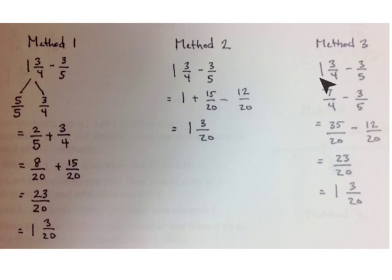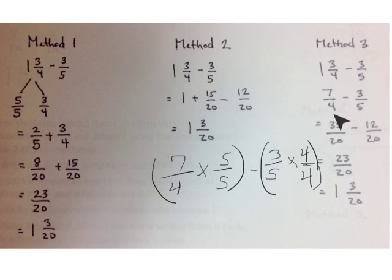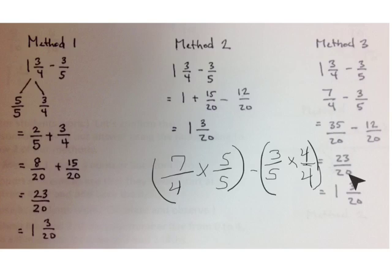The third method is to rename 1 and 3 fourths as an improper fraction: 7 fourths. 1 is 4 fourths, plus 3 more fourths is 7 fourths. So we have 7 fourths take away 3 fifths. We get a common unit by taking 7 fourths times 5 fifths, giving us 35 twentieths, and 3 fifths times 4 fourths, giving us 12 twentieths. 35 minus 12 is 23 twentieths, which is 20 twentieths plus 3 more, or 1 and 3 twentieths.